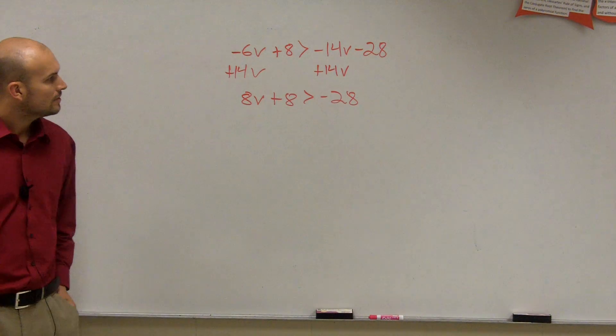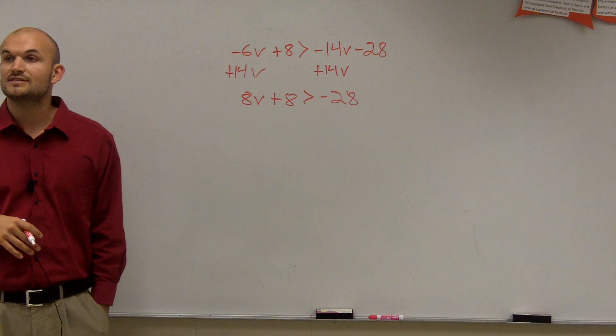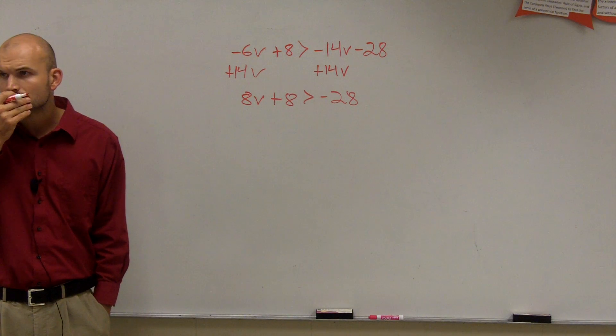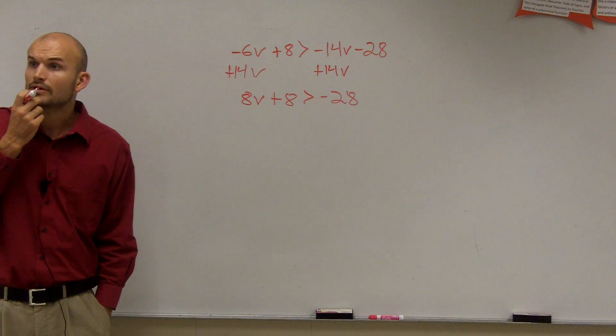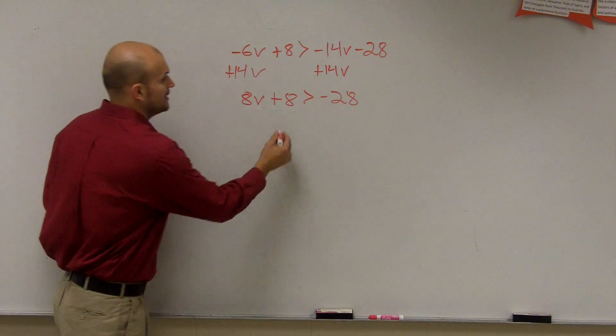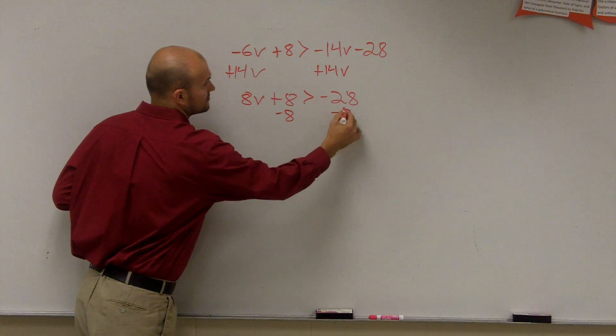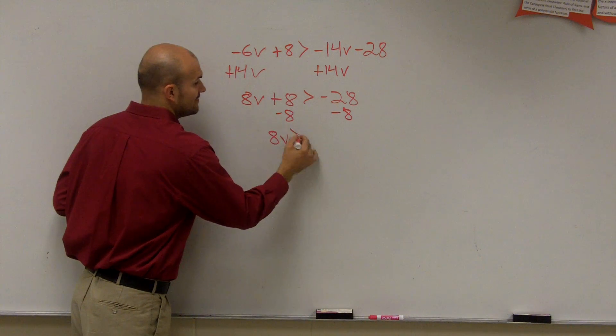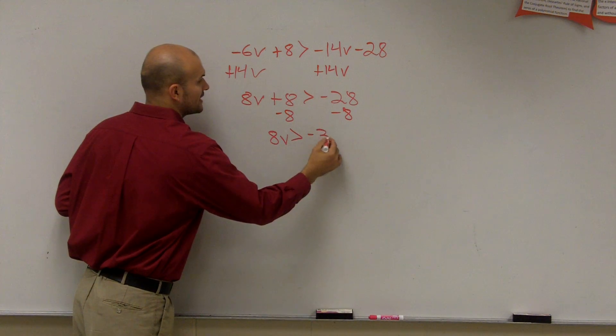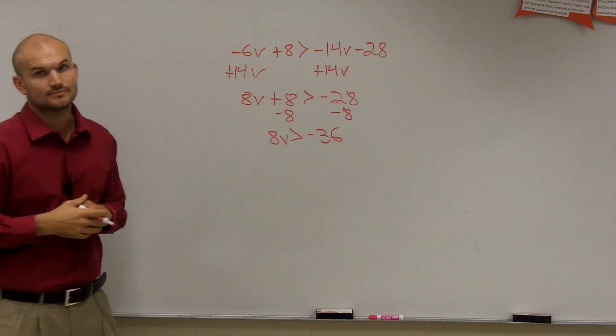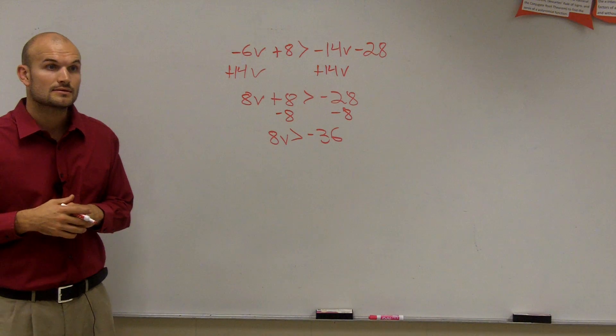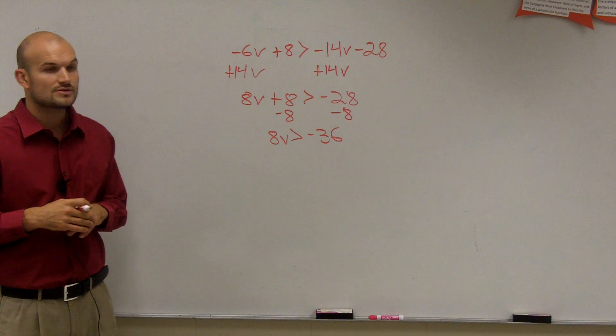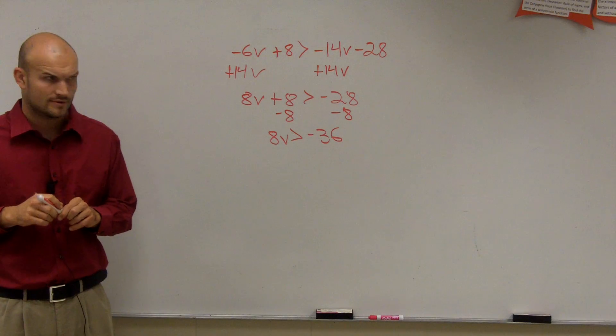Subtract 8 from both sides. So now, I have this as a two-step. Okay? So from here, the next step I need to do, subtract 8. I get 8v is greater than negative 36. Yes? This is number what, 33? 33. 33.